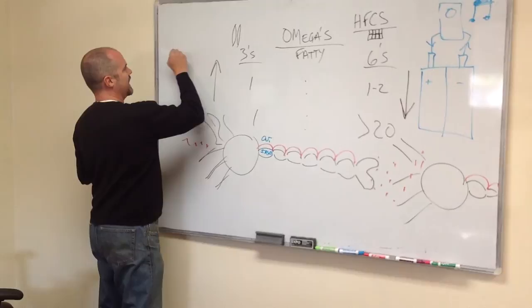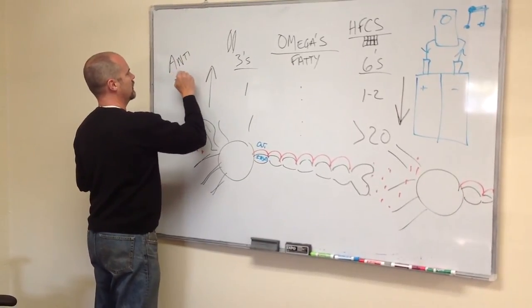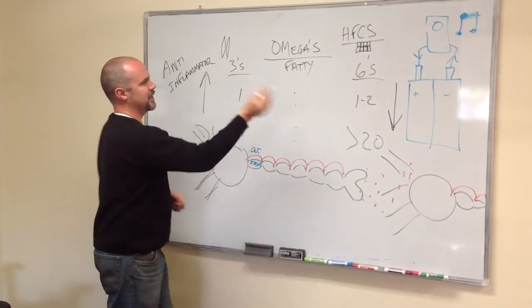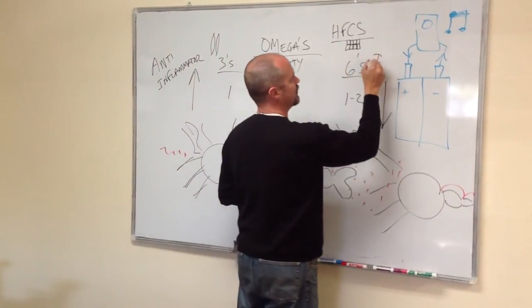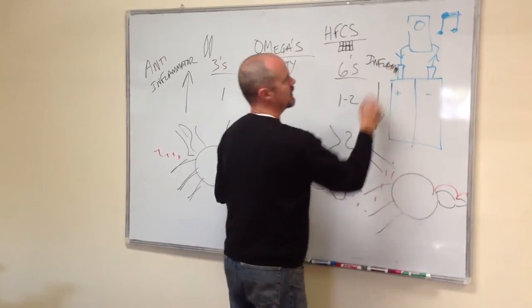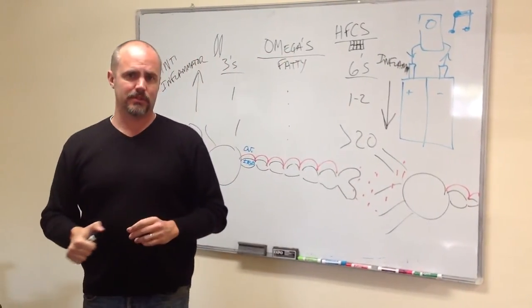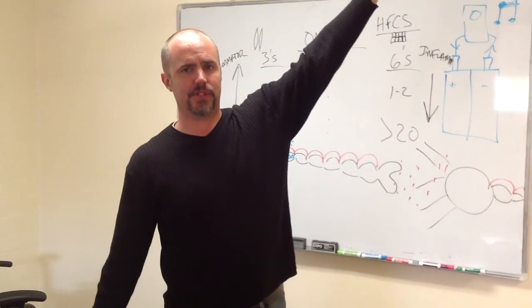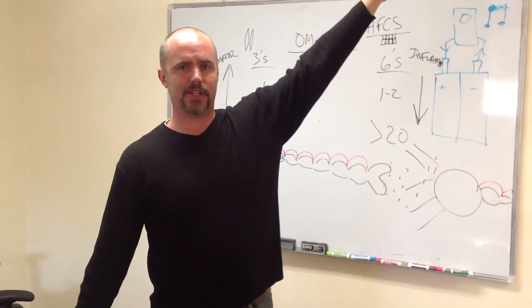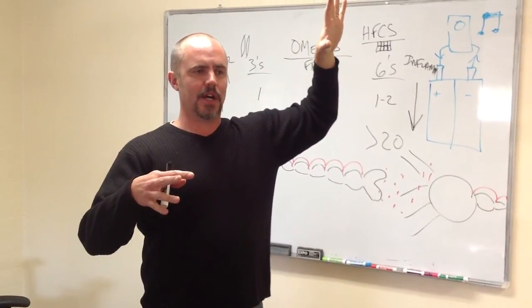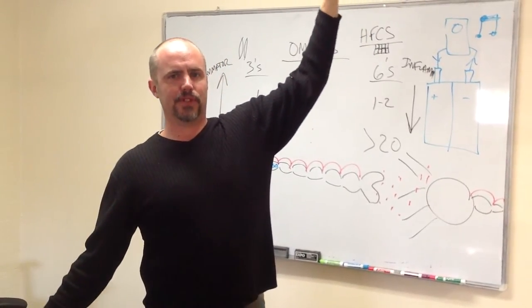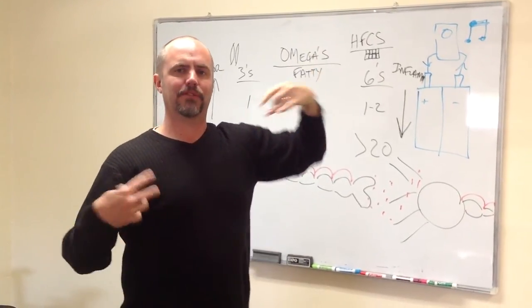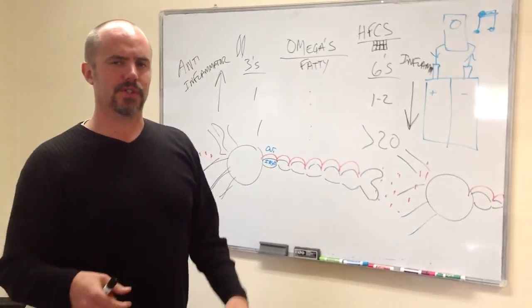Also, by the way, threes are a natural anti-inflammatory, which means sixes cause inflammation if they're too high. So as far as pain goes, if you want to reduce your pain which is caused from inflammation, if you have a ton of sixes, you're eating all that junk that's in those bags, Cheetos and all that stuff, all of that stuff is filled with high fructose corn syrup, which means you're loading your body with sixes, not enough threes, which makes you inflame easier, especially if you're misaligned in your spine.